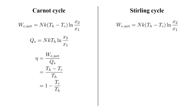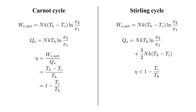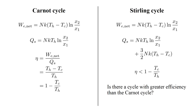For the Stirling cycle, the net work generated is the same as for the Carnot cycle, but the heat supplied by the hot reservoir is greater, because in addition to the isothermal expansion term, we also have a term for the heating of the gas. It follows that the efficiency is less than that of the Carnot cycle. However, as we saw, the heating term can in principle be made arbitrarily small by using a regenerator. This raises the question: is there a cycle with greater efficiency than the Carnot cycle, or can we find a trick like the regenerator to improve it? The answer leads us to the second law of thermodynamics, which is the topic of the next video in this series.